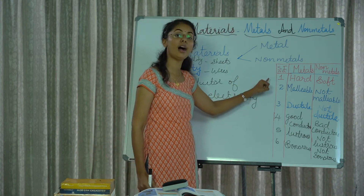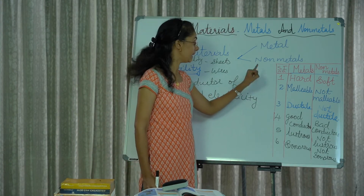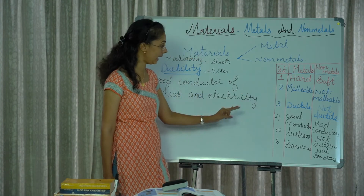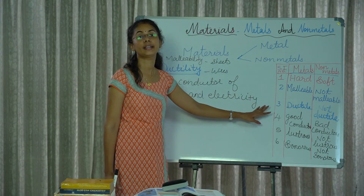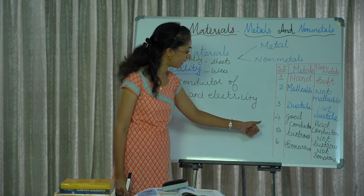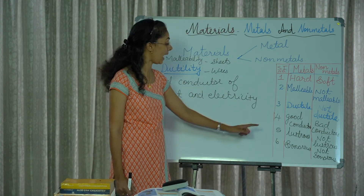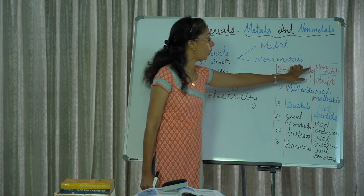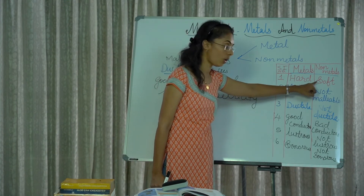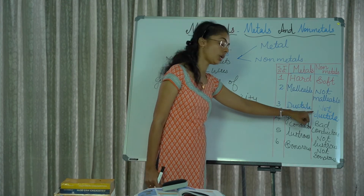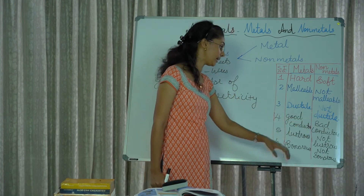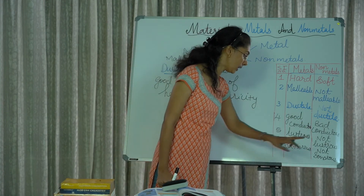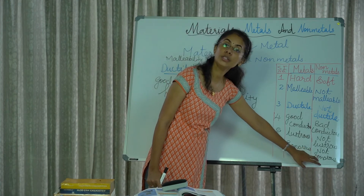These are the physical properties of metals and non-metals. For metals: first, hard; second, malleable; third, ductile; fourth, good conductors of heat and electricity; fifth, lustrous; and sixth, sonorous. For non-metals: they are soft, non-malleable, non-ductile, bad conductors of heat and electricity, non-lustrous, and non-sonorous.